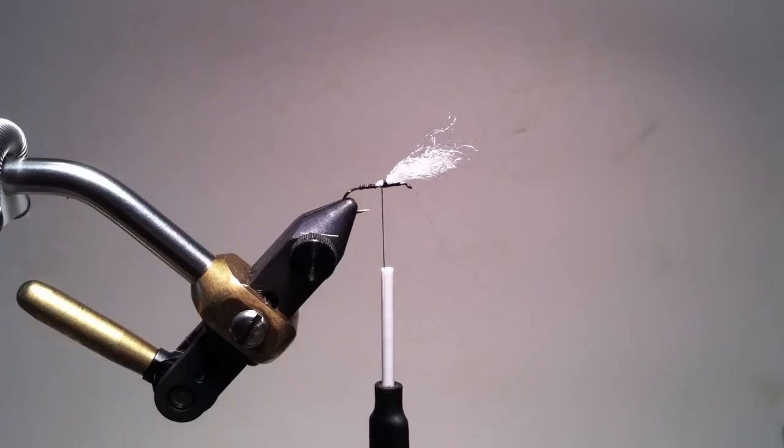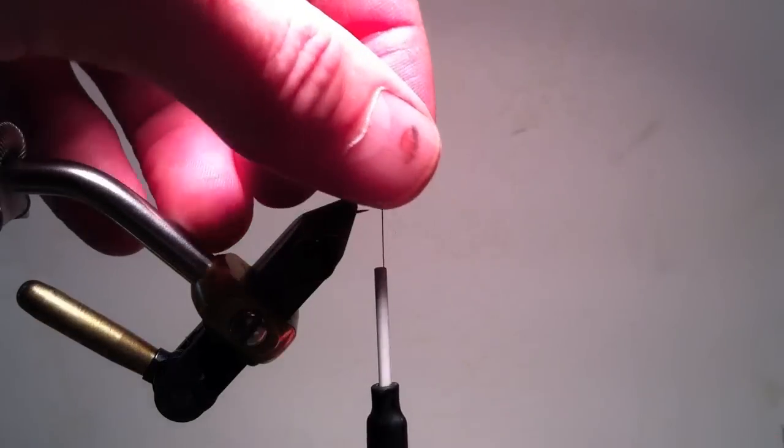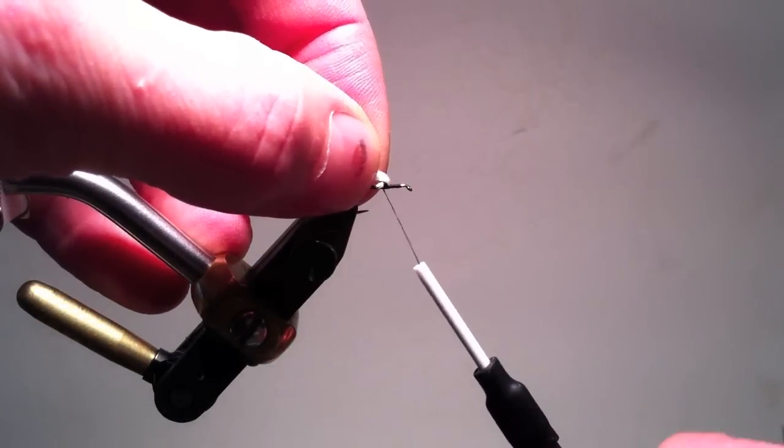When possible, I try to put dry fly wings on after I've used the rotary vice function to put the body in place. However, if necessary, tie in the wing first. Don't post it up until after the body materials are in place.